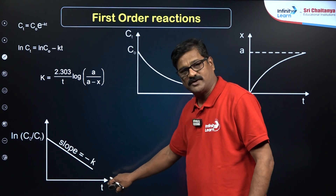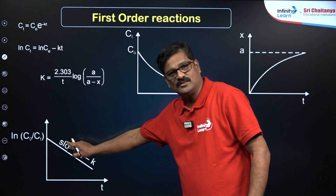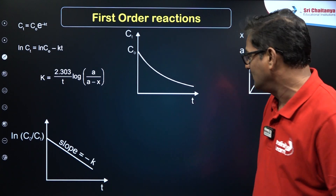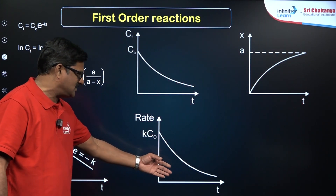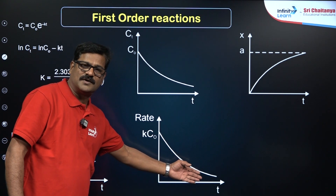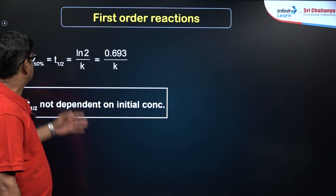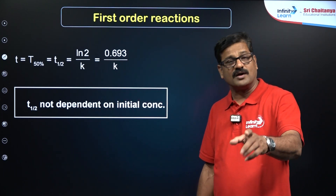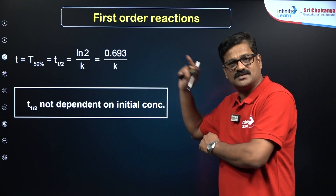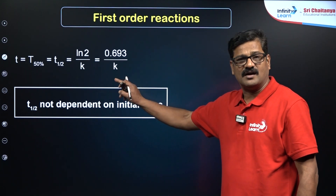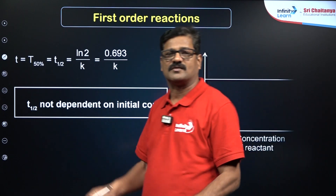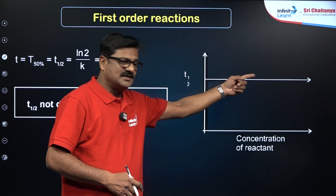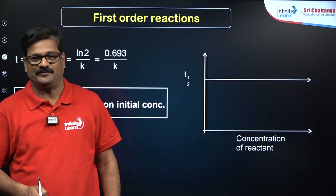A plot of ln(a₀/aₜ) or ln(c₀/cₜ) versus time gives a straight line with negative slope −k. A plot of k·c₀/t versus time gives a curve decreasing downward. The half-life for first order is t½ = 0.693/k — there is no initial concentration term, so t½ is independent of the initial concentration. Therefore, a graph of t½ versus concentration gives a straight line parallel to the concentration axis.